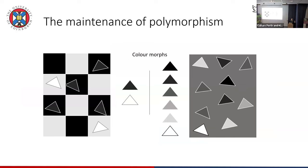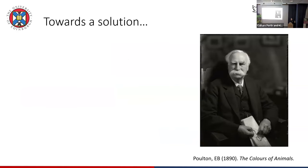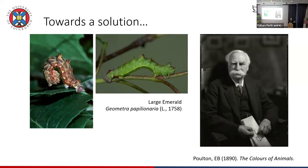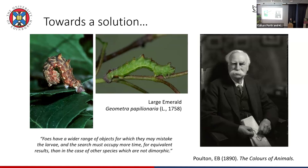So we have two kinds of cryptic polymorphism. The first inklings of a solution come from E.B. Poulton — his excellent book The Colours of Animals. He talks about the caterpillars of the large emerald moth, which have green and brown forms. He writes that predators have a wider range of objects for which they may mistake the larvae, and their search must occupy more time for equivalent results than if they just had one colour form. So it reduces overall predation pressure — they're making it more difficult for predators.